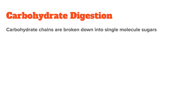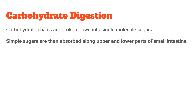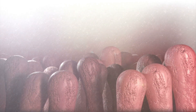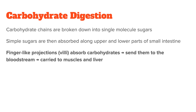Carbohydrate absorption also takes place mostly in the small intestine. Once the carbohydrate chains have been broken down into single molecule sugars, they are quickly absorbed along the upper and lower parts of the small intestine. Small finger-like projections called villi absorb the carbohydrates and send them to the bloodstream, where they will be carried to the muscles and liver.